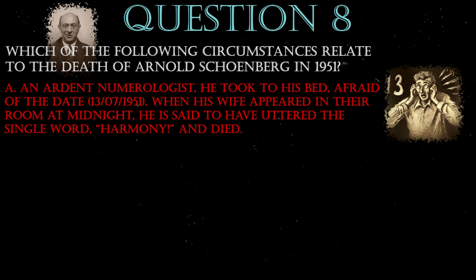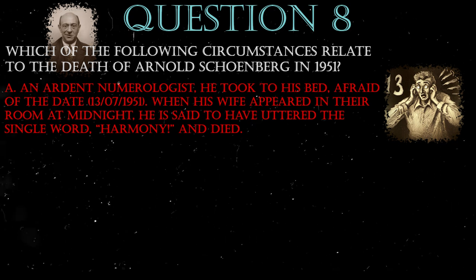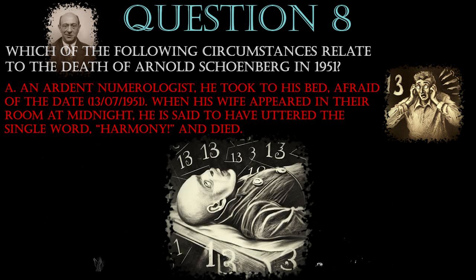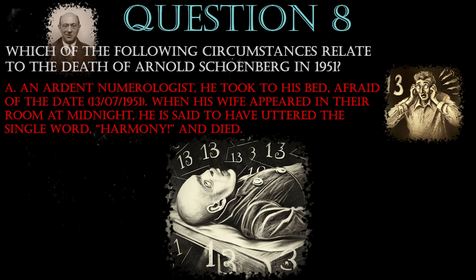Completing the Second Viennese School collection is the granddaddy of them all, Arnold Schoenberg, and his death is very mysterious too. He was an ardent numerologist. He took to his bed on the 13th of July 1951 because he was worried about the concurrence of the numbers 13 — his unlucky number — and 7 — his lucky number — in his 73rd year. He died that evening. His last words were...